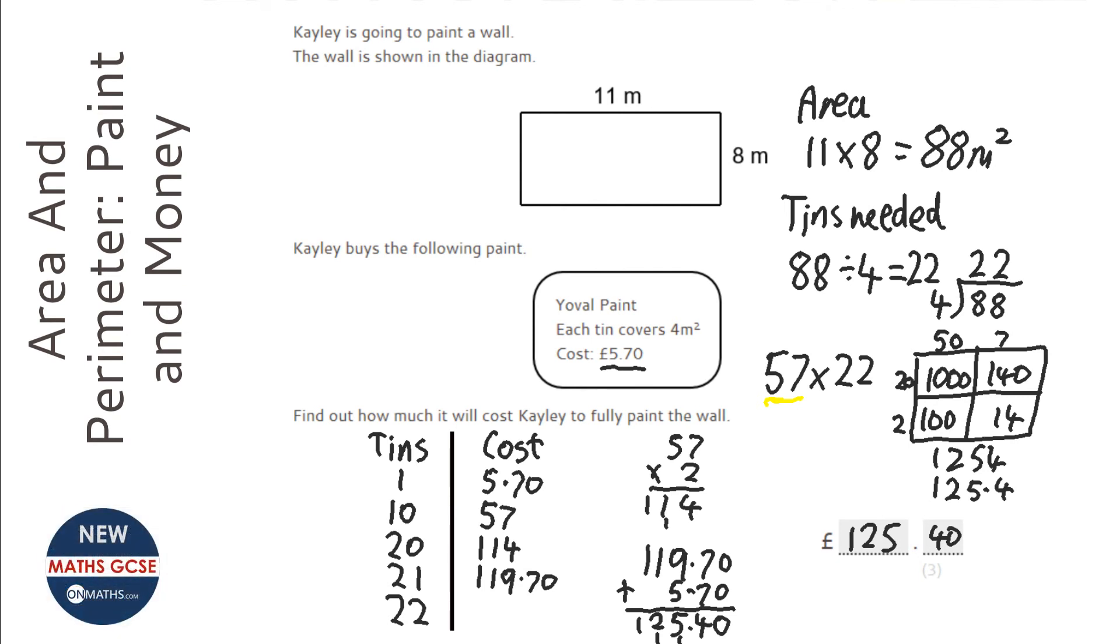I suggest if you've got any problems doing £5.70 times 22, a different way you could do it is just do it in pence. Make it 570 pence times 22 and then just convert your answer back into pounds. I definitely recommend you practice multiplying big numbers and decimals together if you had problems with this.